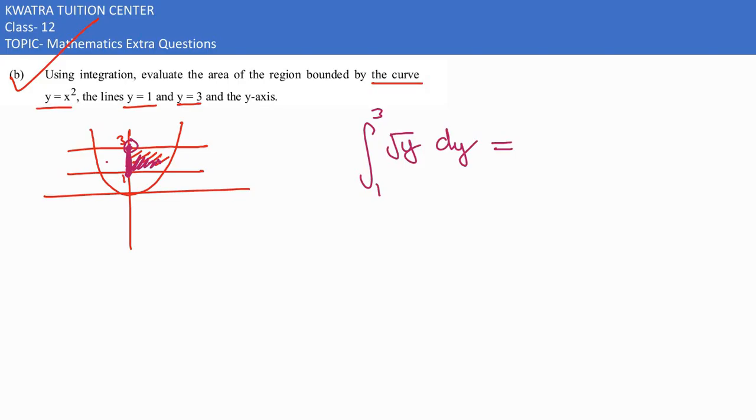Root y—we have to integrate. So which is nothing but y to the power half, or half plus 1, add it, so it would become 3 by 2. And below we also have 3 by 2. Limits are varying from 3 to 1.